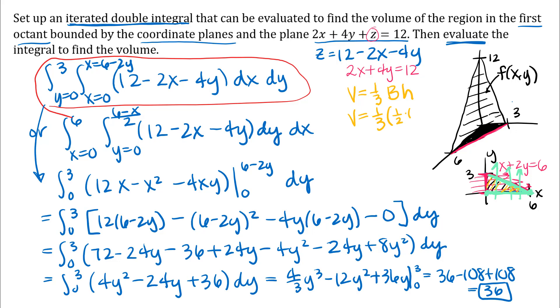The area of the base is the area of the triangle in the xy-plane: one-half times six times three. The height of our pyramid is 12. Simplifying, I get 36, which checks with what we got from our integration.